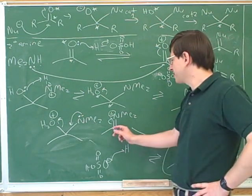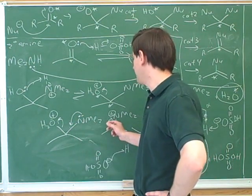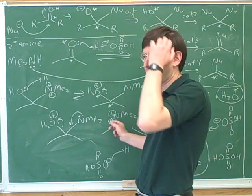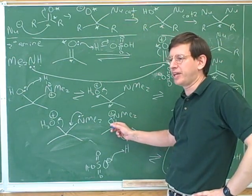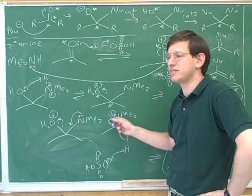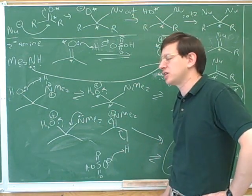Sometimes you might see instructors write the mechanism this way. I leave this out because it seems like a needless complication. Because all we're doing is forming a pi bond, and then in the very next step, taking away the pi bond. It doesn't give us all that much more insight. It just complicates the mechanism. But it's important to see that you might see it written this way sometimes in class or lecture. We talked about this in the previous session.